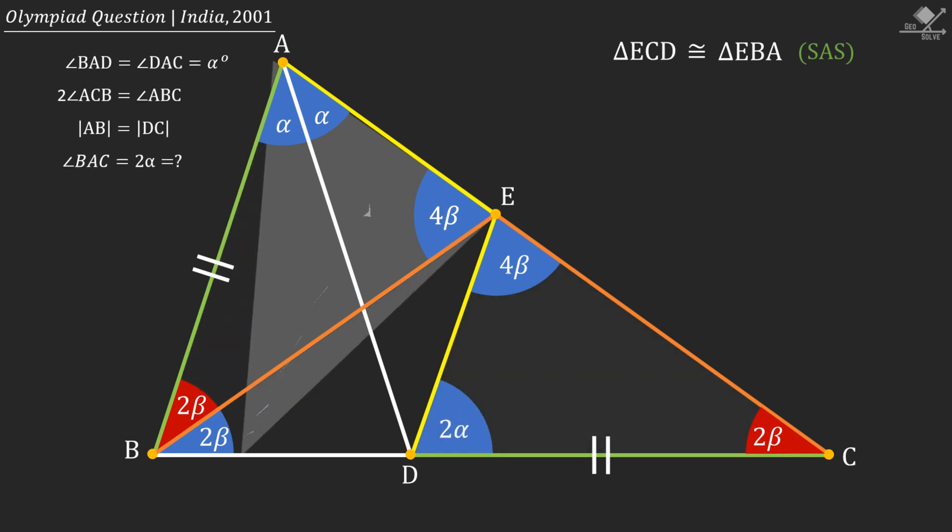Since triangle AED is an isosceles triangle, angle EDA will be α degrees.